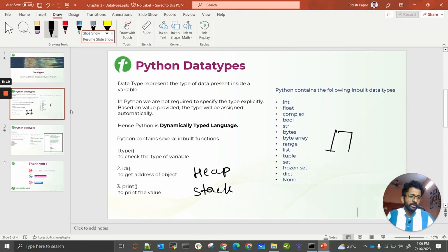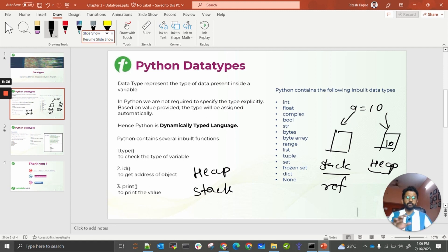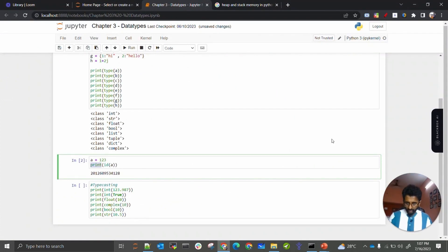Whenever you are defining a variable, when you see a equals 10, a will be stored in stack which will be referring to the value stored in heap memory. This is globally accessible and this is limited to the scope that you define. These are two types of memories that we deal with whenever you are defining any objects, classes, or functions inside Python.